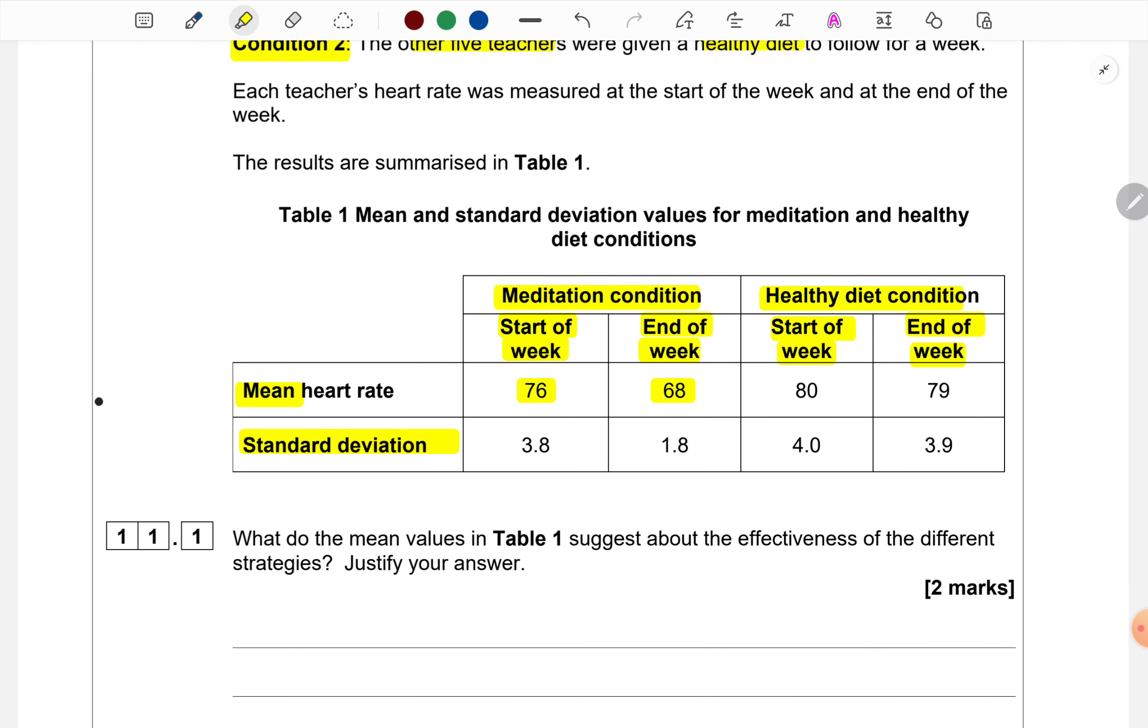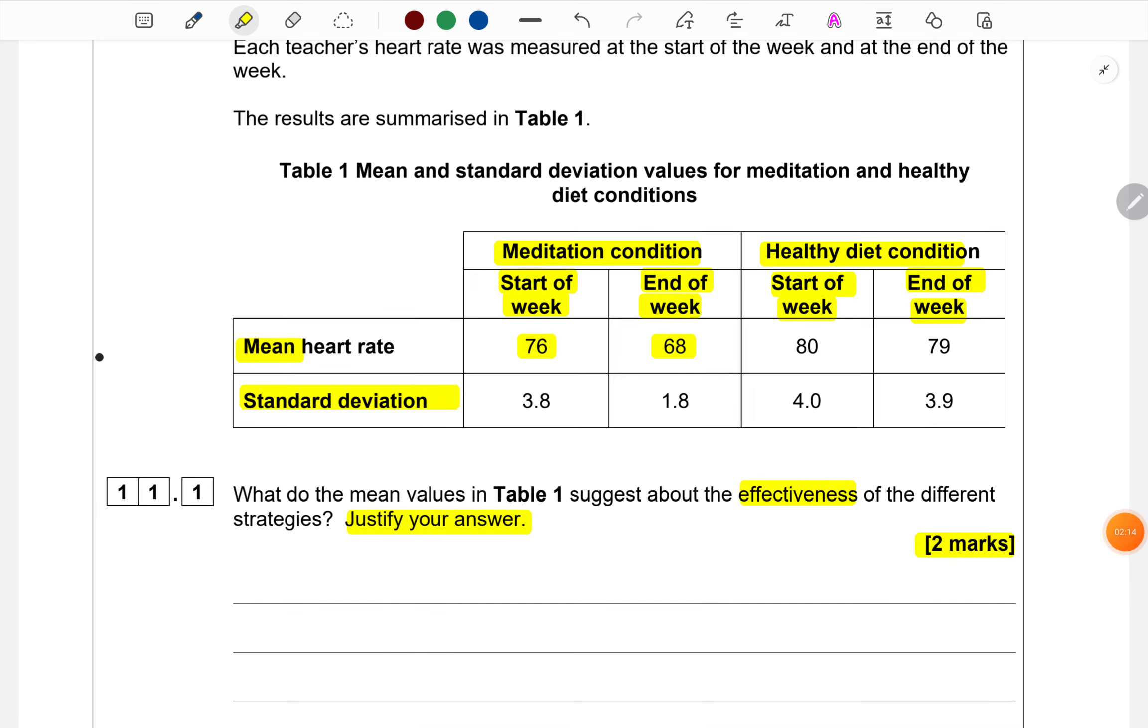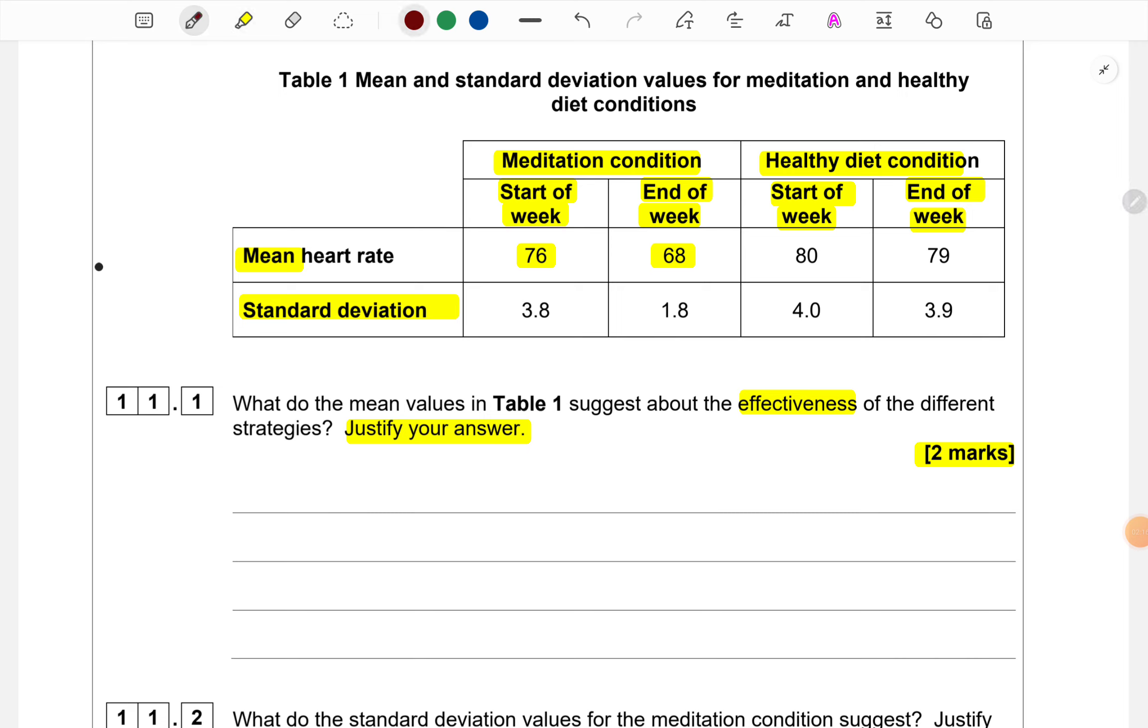Now coming to the question: what do the mean values in table 1 suggest about the effectiveness of different strategies, justify your answer. This is for two marks. The demarcation should be clear. One mark is for suggesting something about the effectiveness. Second is for the justification, clear as that.